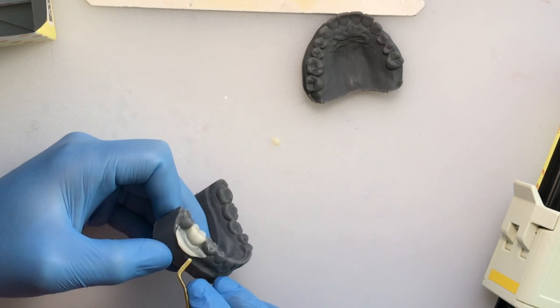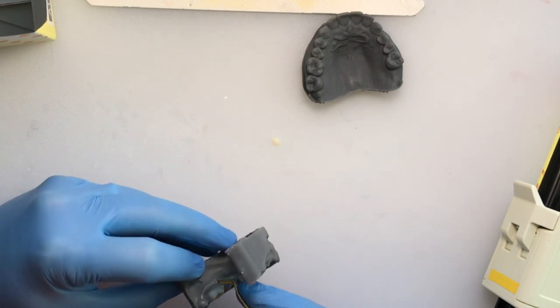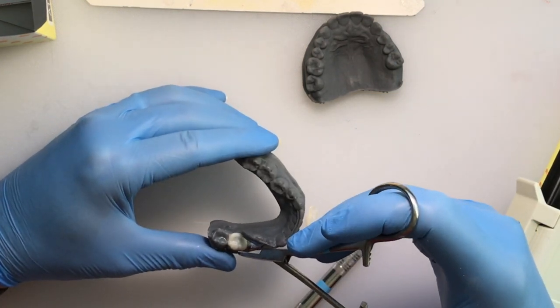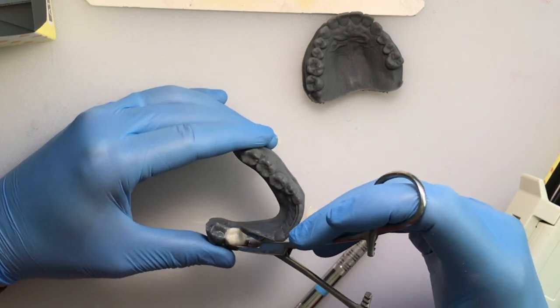You then remove the excess or flash, and carefully with the hemostat, you can now remove the crown from the model, or in your case, from the mouth. Once you've removed it, I go ahead and use a polishing wheel.